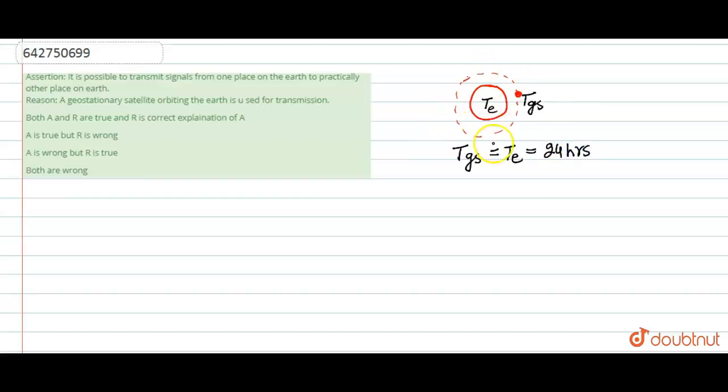So that is why these types of satellites are used for transmission on Earth. Because of this, it is possible to transmit signals from one place on Earth to any other place on Earth. So our assertion is true and reason is also true because geostationary satellites are used. Therefore our correct option is A.